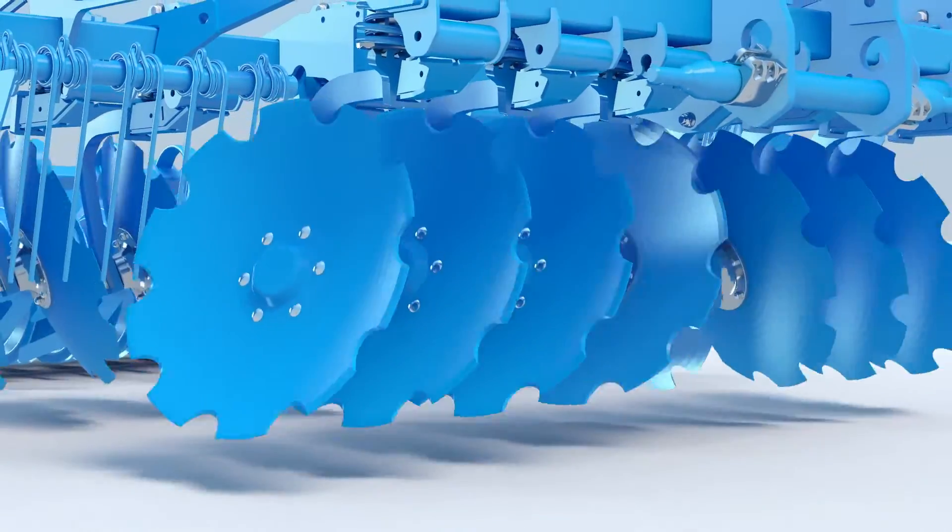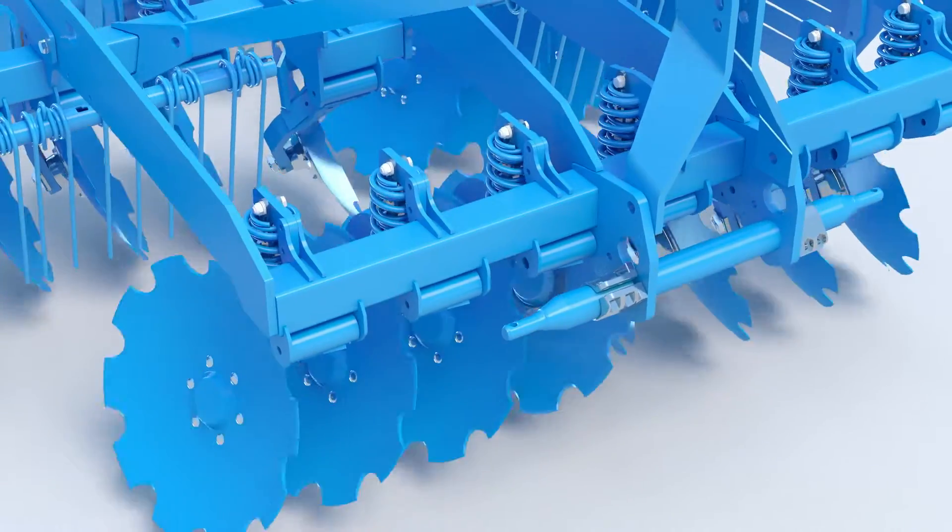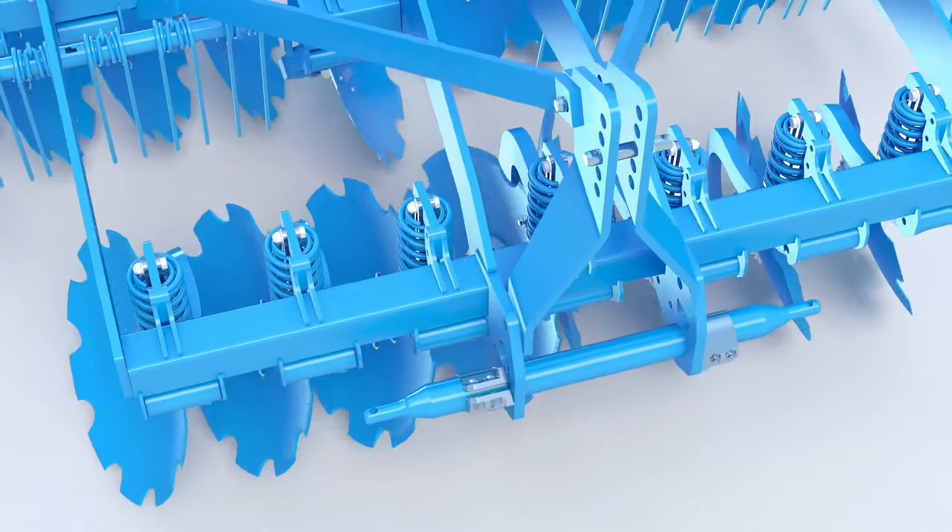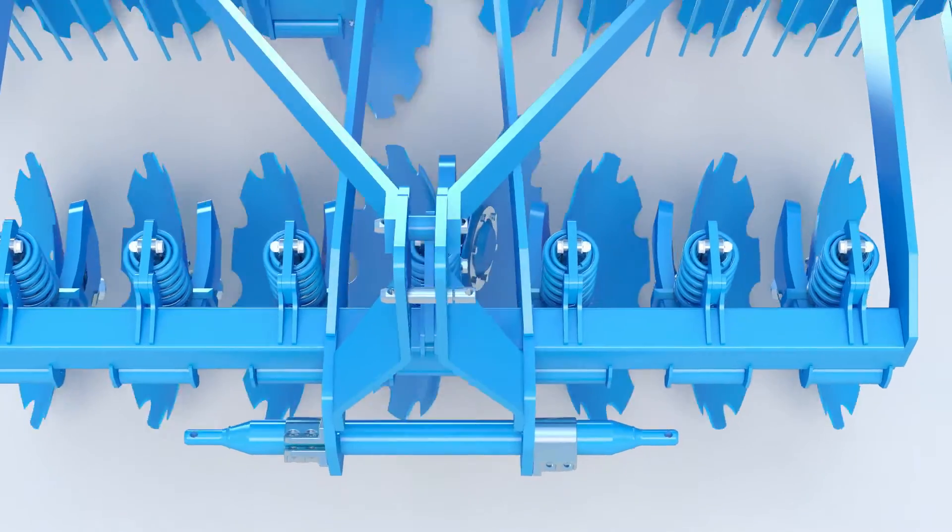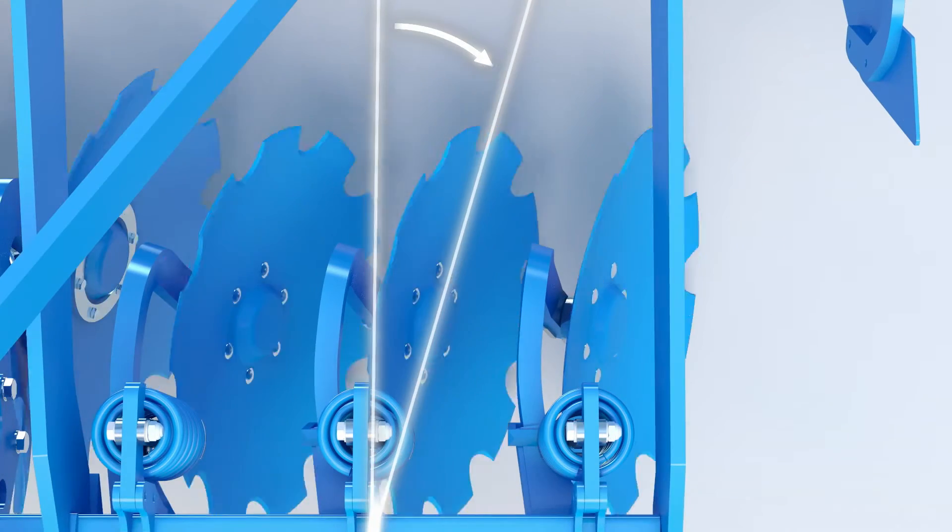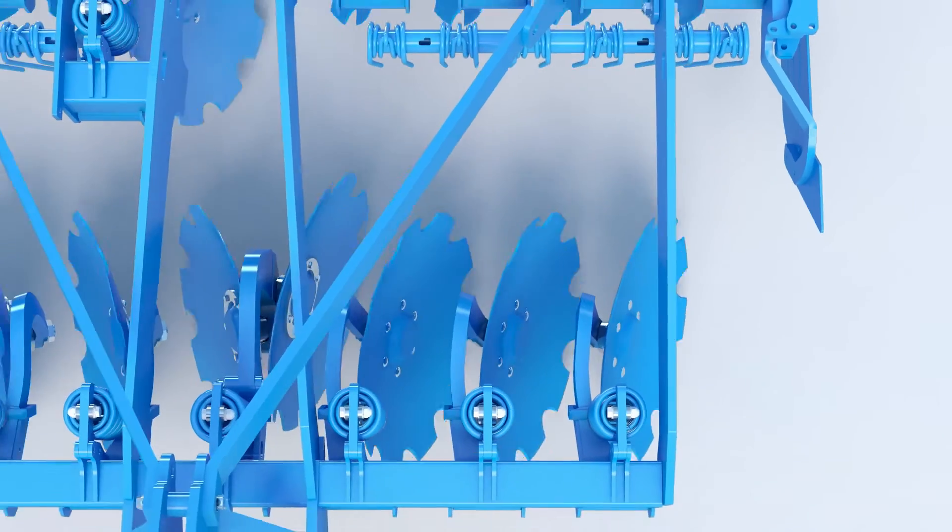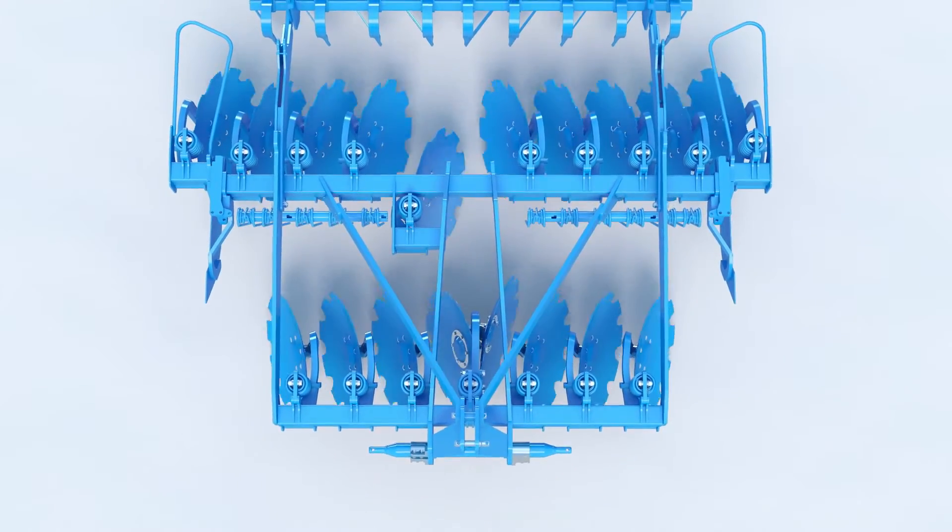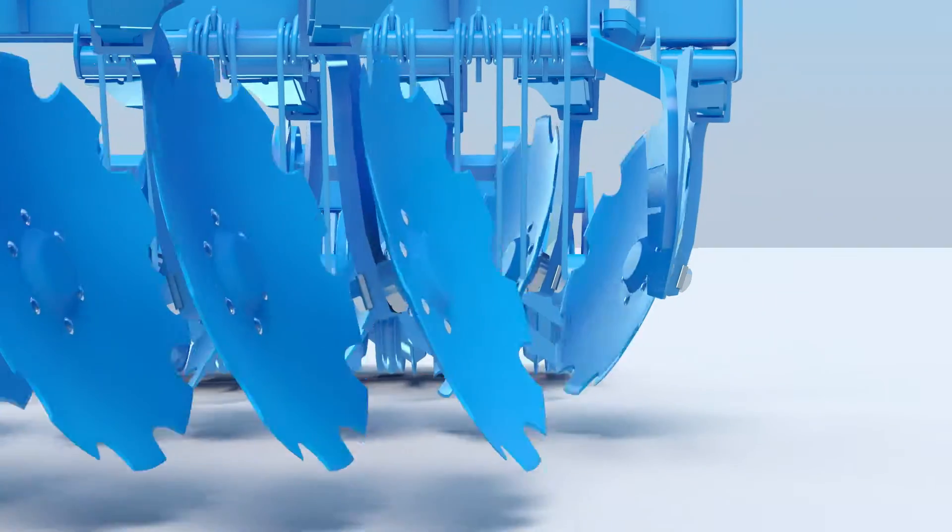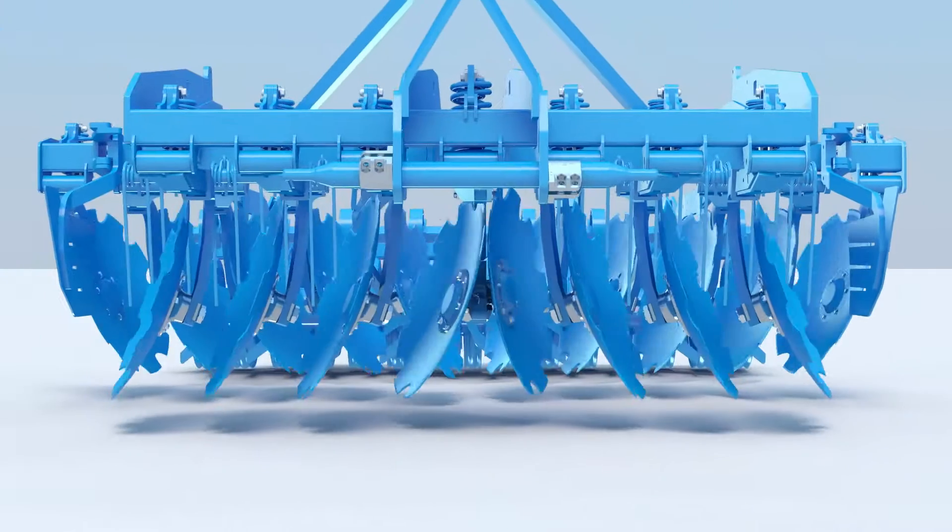A closer look at the placement of the discs reveals what makes the Rubin 12 unique. In the leading row, the concave sides of the discs work outward. The discs are also turned outward at a 16 degree angle. This ensures ideal soil penetration and the necessary rotational momentum. The discs are also tilted at an angle of 20 degrees to the ground. This gives them the required grip.